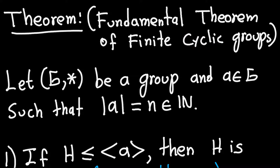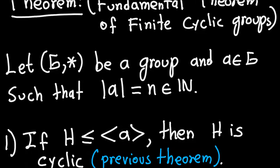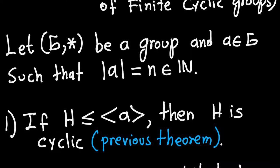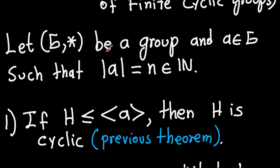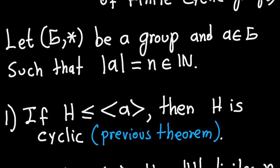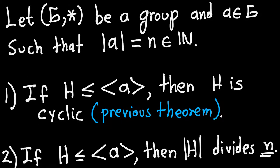One part of this theorem was already proven in the last video lecture. So let's look at what the statement says. Suppose we have a group and we have an element in that group such that that element has order N. The first part we proved already: if you have a subgroup of a cyclic group, then the subgroup itself is cyclic. That is the theorem we proved in the previous lecture.